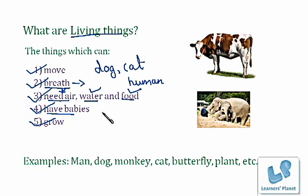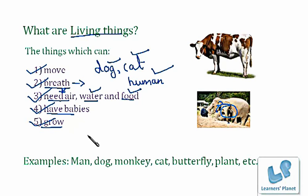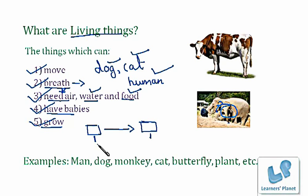All living things have babies. Even a dog has a baby, even a cat, even human beings. Even your parents have — you are their babies! Even an elephant has its baby. All living organisms also grow. Look at a photograph of yourself when you were born and compare it to a recent one — you will see how much you have grown, maybe taller or bigger. So living things move, breathe, need air, water and food, have babies, and grow.